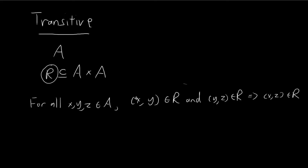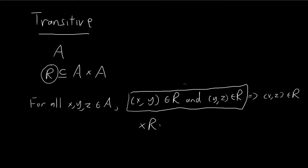So what this means is that if we know that x is related to y, and y is related to z, then this immediately implies that x is related to z. So if these two statements are true, then this statement must be true. And if this holds for all x, y, z's that are elements of A, then we can say that our relation is transitive.